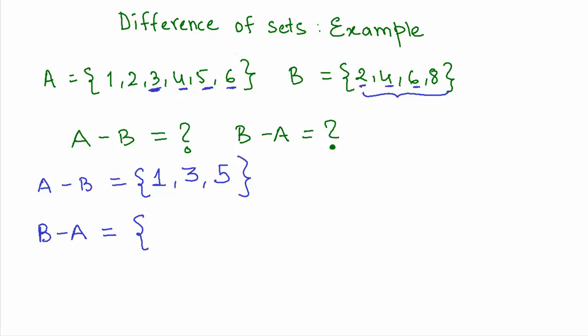Do we have 2 in B? Yes, but it is present in A as well. 4? Yes, that is present in A as well. 6? Well, 6 is also present in A. Then we come to 8. So 8 is not present in A, and therefore 8 is the only element.